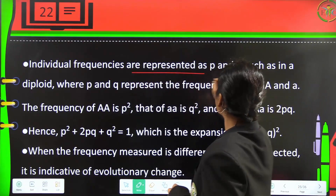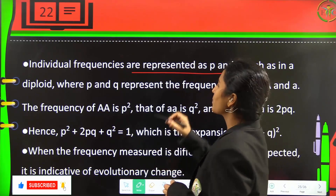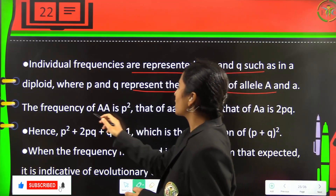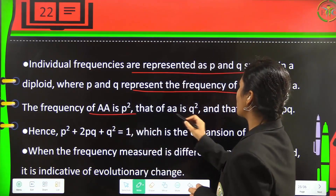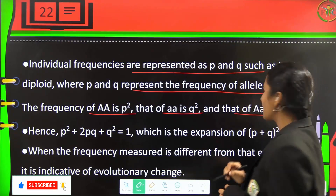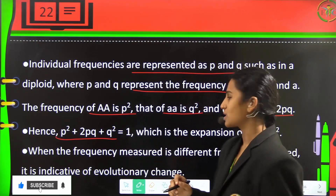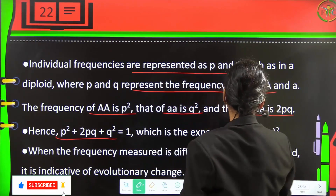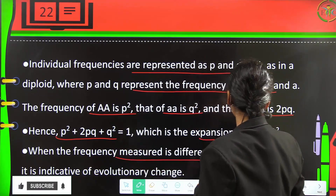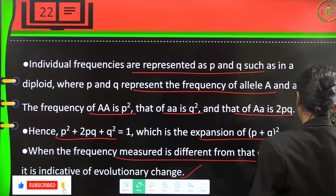Individual frequencies are represented as p and q in a diploid, where p and q represent the frequency of allele A and allele a respectively. The frequency of AA is p², of aa is q², and of Aa is 2pq. Hence p² + 2pq + q² = 1, which is the expansion of (p + q)². When the frequency measured differs from expected values, it is indicative of evolutionary change.